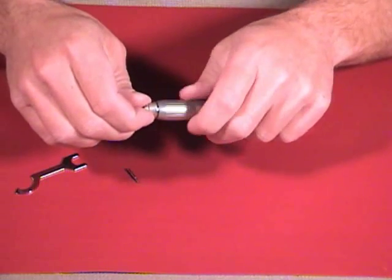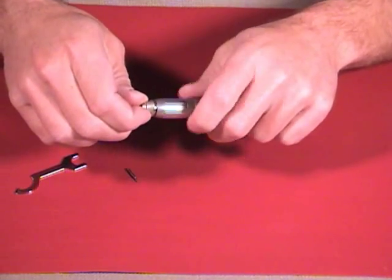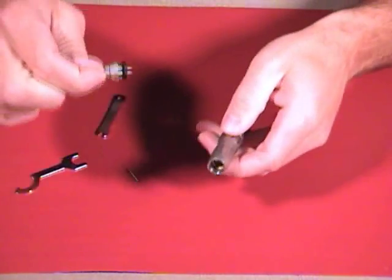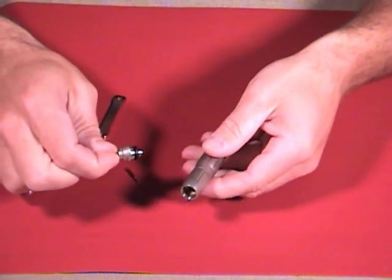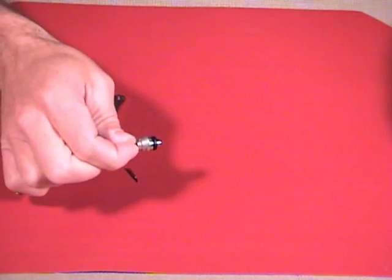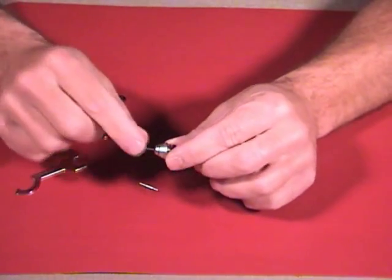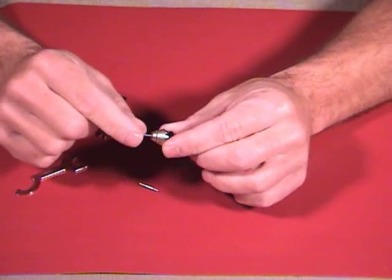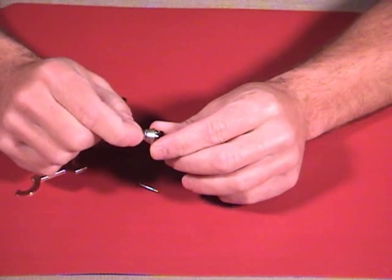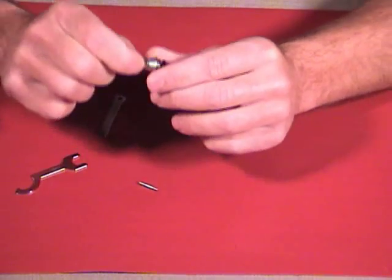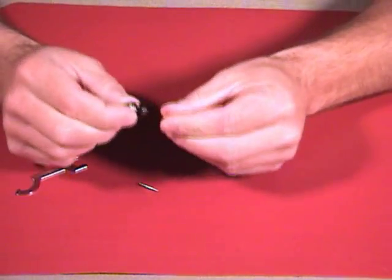What that does is that separates the turbine cartridge from the handpiece. Let's just get the handpiece out of the way here. We're just going to be working with the turbine because we're going to replace this collet that's up inside the turbine, the actual part that holds the burrs itself.